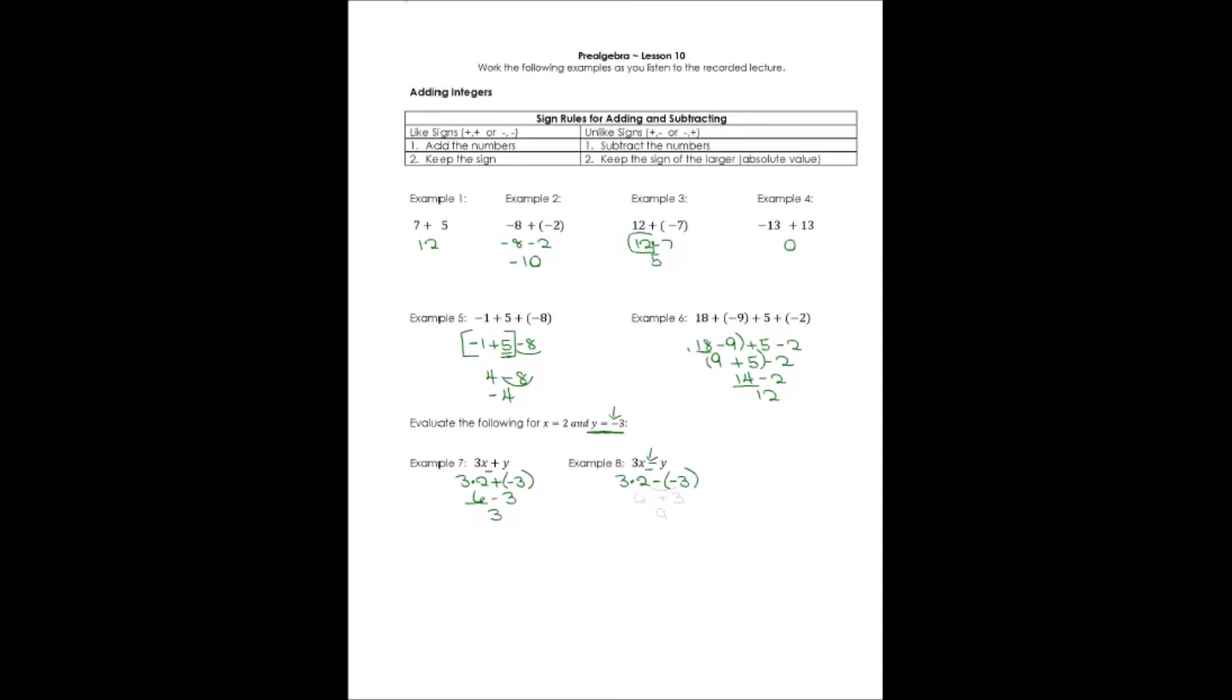What I'm going to have to do is two negatives, turn it into positive. I can say 3 times 2 is 6. And then minus negative 3 is plus 3. Well, 6 plus 3, the answer would be 9.